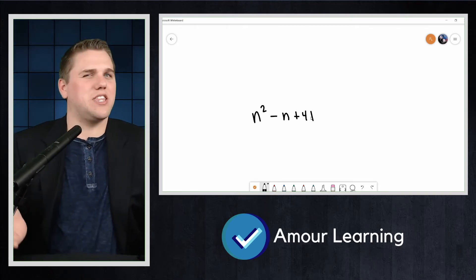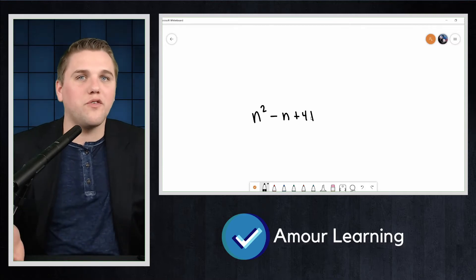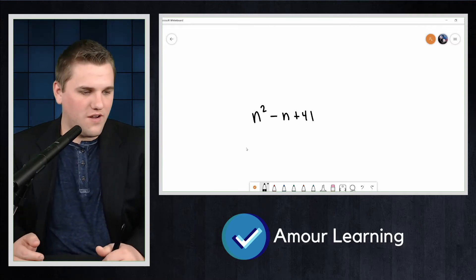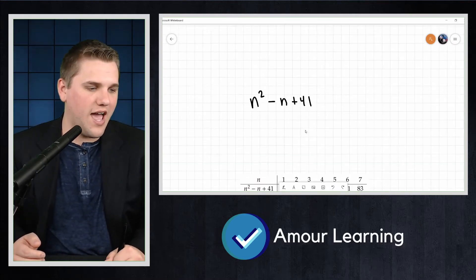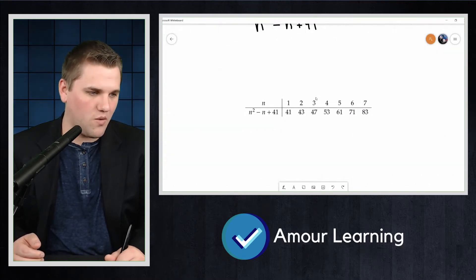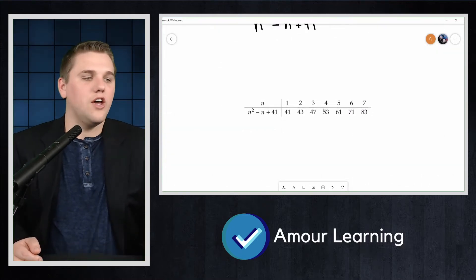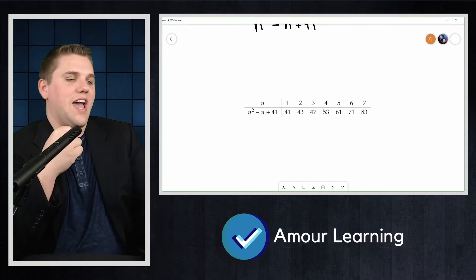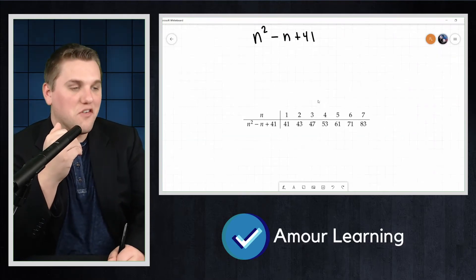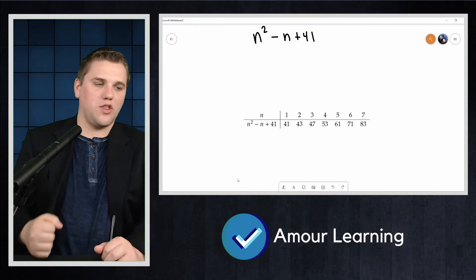This might seem like a silly thing to want to prove until you find some values for n. In fact, I have a table here for you all. So n equals 1, n squared minus n plus 41 is 41. If n equals 2, it's 43.